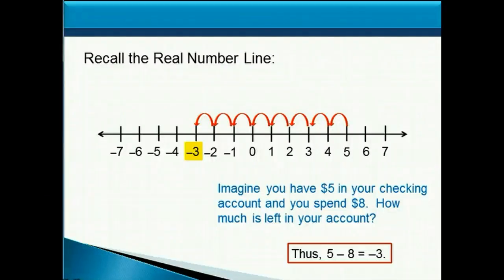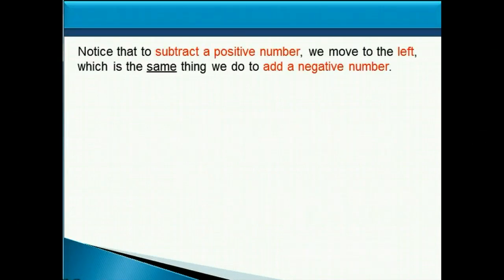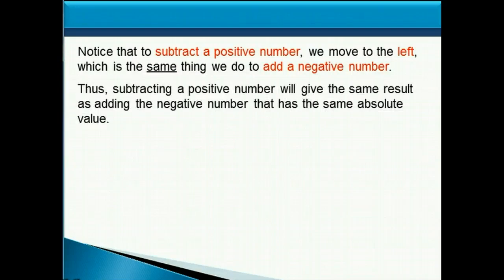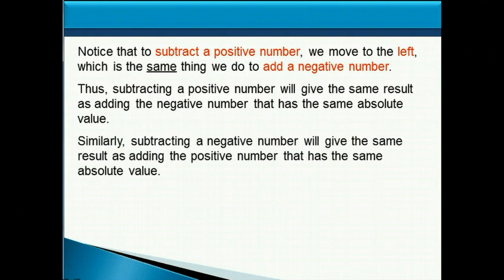Notice that when we used addition and we were adding a positive number we would move to the right, but when we're subtracting a positive number we do just the opposite and move to the left. So to subtract a positive number we move to the left, which is the same thing we do to add a negative number. Thus subtracting a positive number will give the same result as adding the negative number that has the same absolute value. Similarly, subtracting a negative number will give the same result as adding the positive number that has the same absolute value.